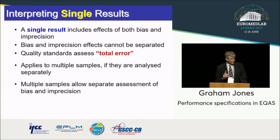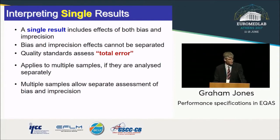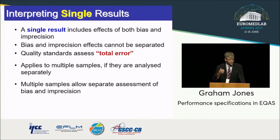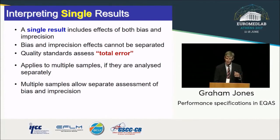A patient gets one result, and often EQA is the same — a single result includes the uncertainties or errors of everything that's gone into it: bias, imprecision, analytical specificity issues — combined into what we can call total error or total uncertainty. Therefore, if we want to put a performance standard against it, we need one against a single result that encompasses all of those factors. They may be traded off against each other, but it's a single set of results. Once you have multiple samples, then you can tease out the separate subparts — whether there is bias, imprecision, and how large they are.